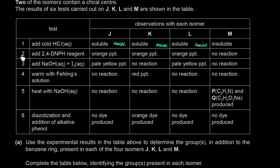The second test is 2,4-DNPH, and an orange precipitate is observed with J, K and L, but there's no reaction with M. 2,4-DNPH is a test for aldehydes or ketones — a positive result indicates a carbonyl group is present. So J, K and L have an aldehyde or a ketone, whereas M does not.